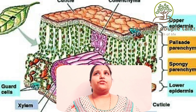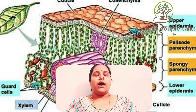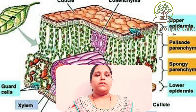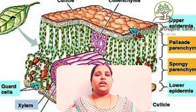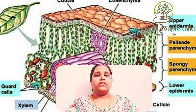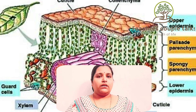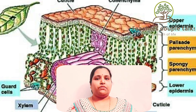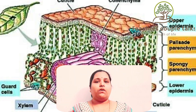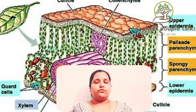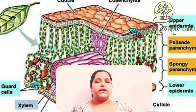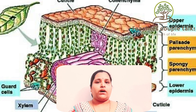The transection of leaf shows upper epidermis and lower epidermis. These upper and lower epidermis of the leaf are spread with stomata on their surfaces. The opening of the stoma is guarded by two kidney-shaped guard cells, and the opening is called stoma.